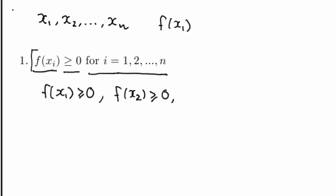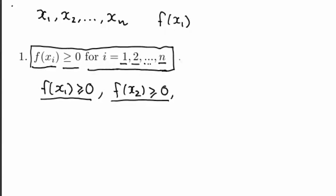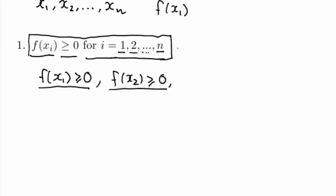With this notation we loop over i and let i go from 1 to n, so that when i starts at 1 we have this statement, then i goes to 2 and we have this statement, and i keeps on going until it reaches n, and then we have the statement that the probability of the last possible outcome must be greater than or equal to 0 as well.